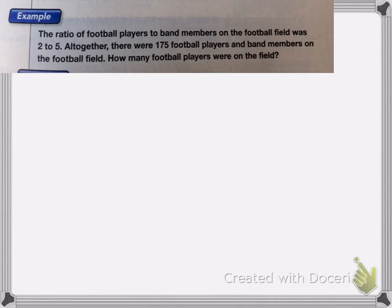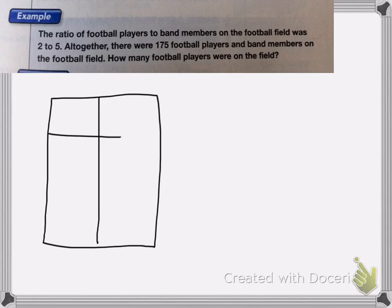So just like we always do when dealing with ratios and unknowns, we're going to draw my ratio box. But instead of just having 2 rows, I'm going to have 3 rows. So the last row is going to be my total. So I have the football players, the band members, and my total. And again, at the top I have my ratio and the actual count.